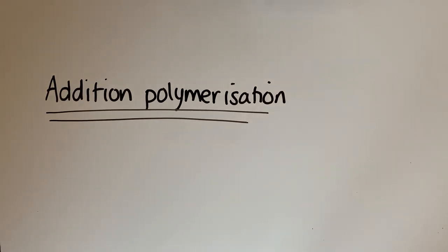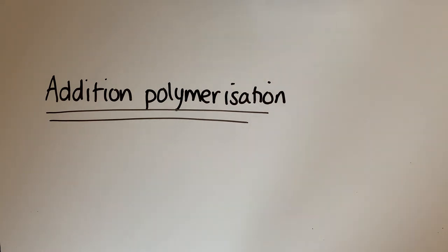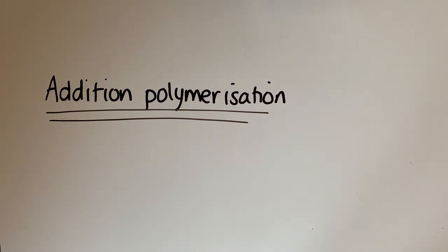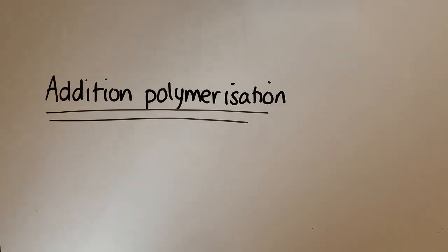We're now going to have a look at another reaction that alkenes undergo. So far, we've looked at four reactions, which were hydrogenation, hydration, halogenation, and reaction with hydrogen halides. So the fifth reaction that alkenes can undergo is addition polymerization. We've seen that all alkenes undergo addition reactions, so this is just another example of an addition reaction that alkenes can undergo.